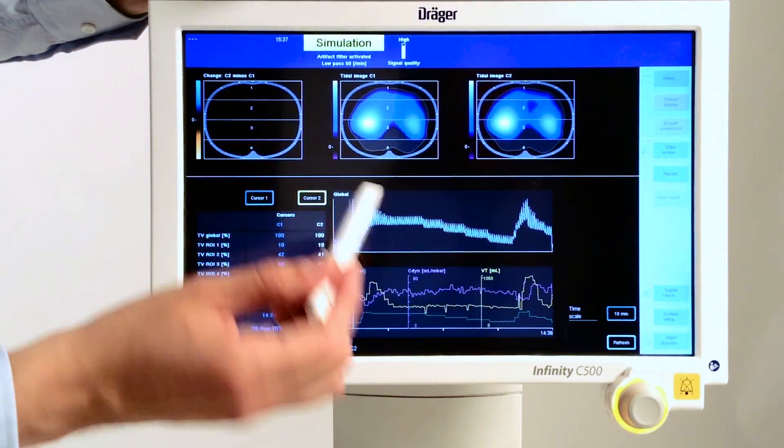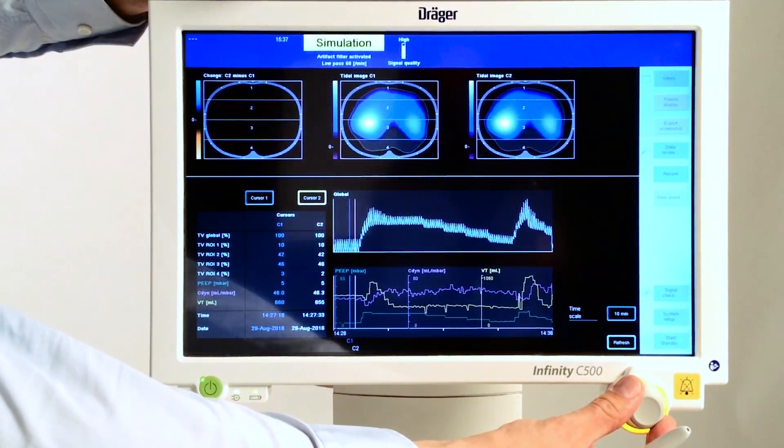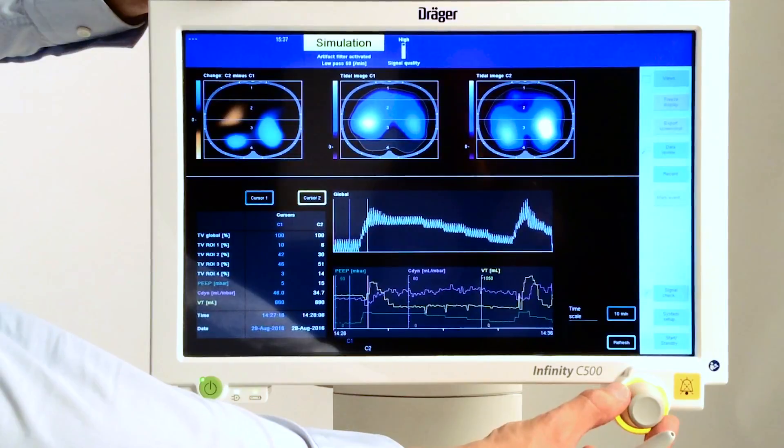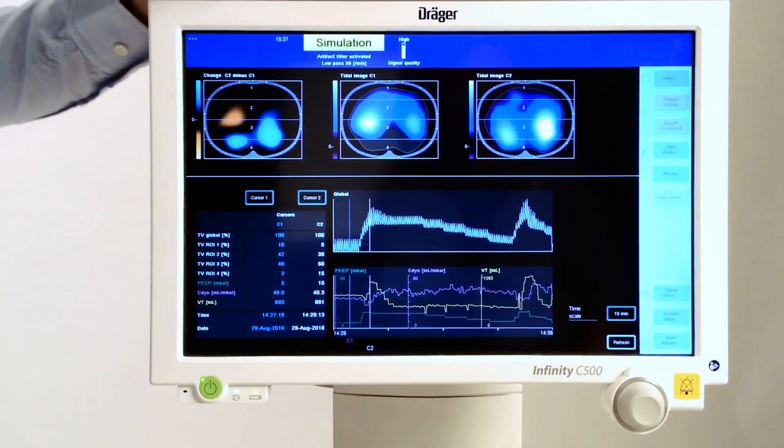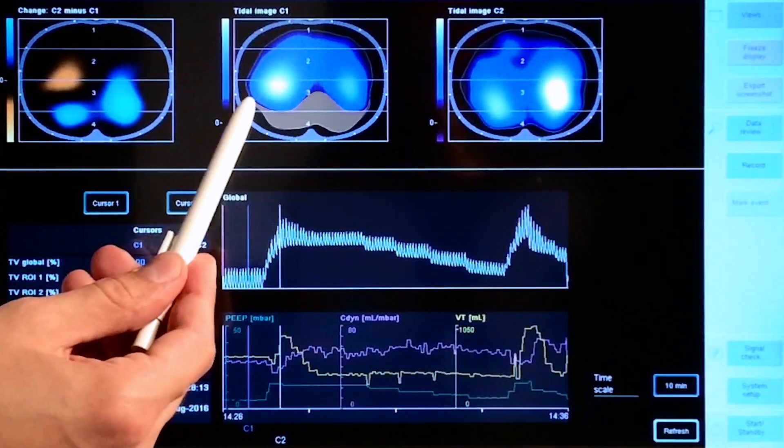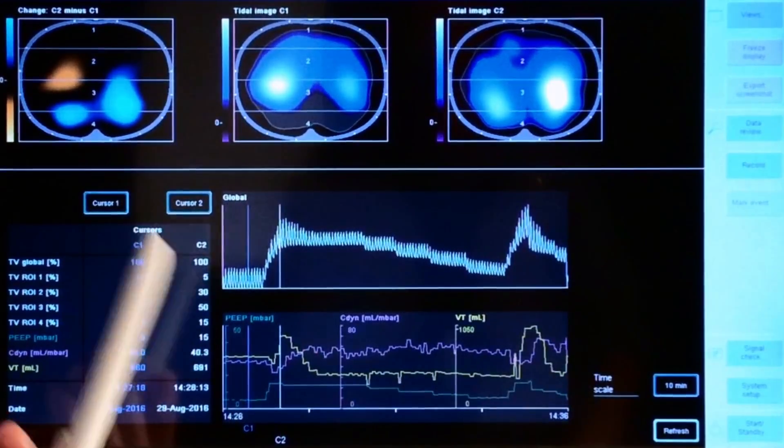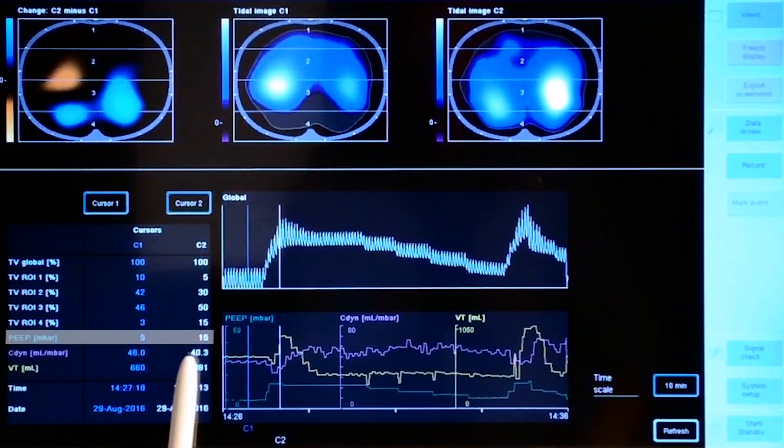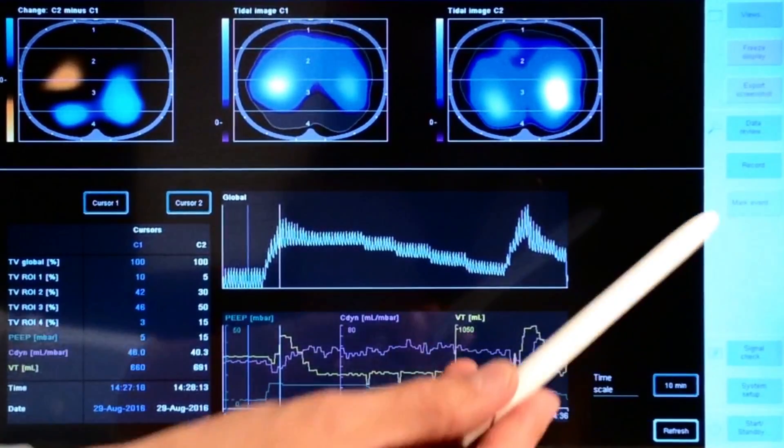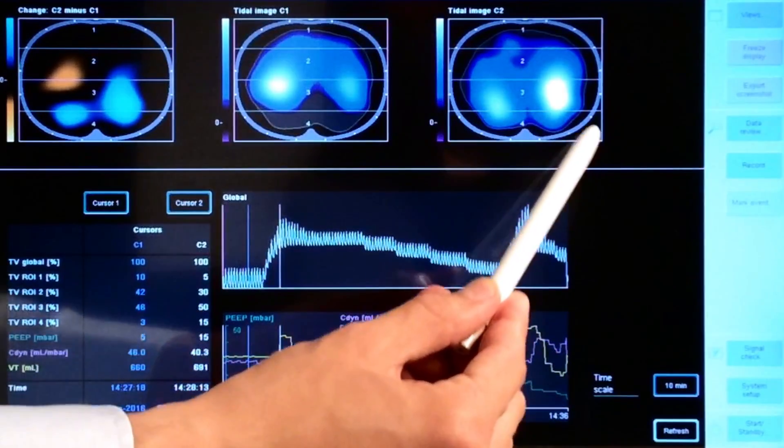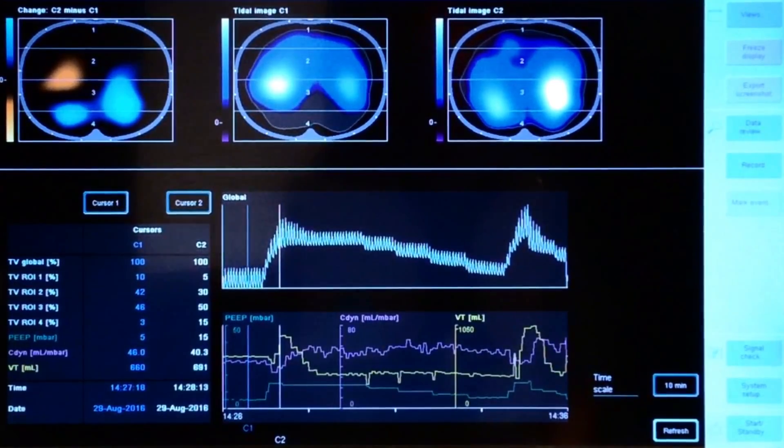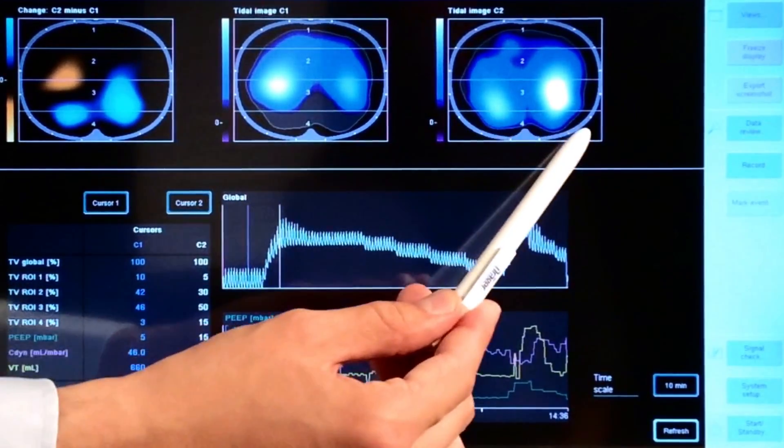Now we take cursor number two and move it breath by breath to see what's happening inside the thorax and how ventilation is redistributed. This is the baseline, and we can see the lack of dorsal ventilation. When we increase PEEP from 5 to 15, we see a significant increase in dorsal region number four. As you increase inspiratory pressure, you can see parts of the lung opening up.